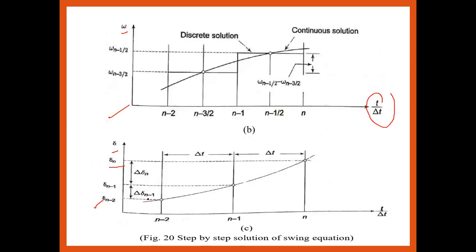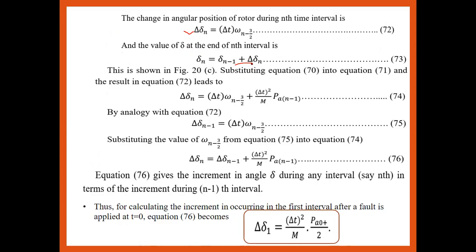So the value of delta_n is delta_(n-1) plus Δδ_n. Substituting the value of Δδ_n from equation 72 into equation 73, and after simplification, we get Δδ_n in terms of Δδ_(n-1) plus a term involving Δt and Pa. Substituting the value of omega_(n-3/2) from equation 74, equation 76 gives the incremental angle within any interval.